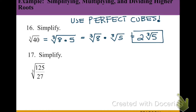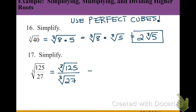In our next example, we're taking the cube root of a fraction, or a quotient. We want to split it into the cube root of the numerator and the cube root of the denominator. So we get cube root of 125 over the cube root of 27. Simplifying each, the cube root of 125 is 5 and the cube root of 27 is 3, giving us 5/3. We can use our calculators or our knowledge of perfect cubes.